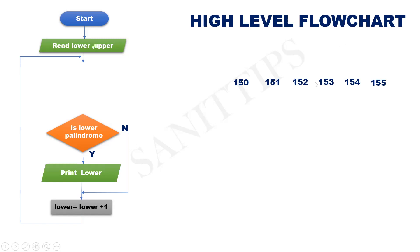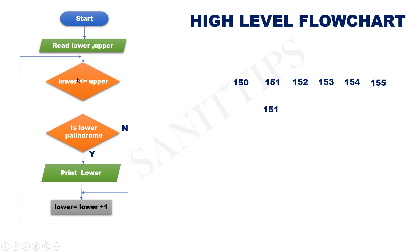Again it is 153. 153 is not palindrome, go to next number 154. 154 is not palindrome, go to the next number 155. 155 is also not palindrome, so we have reached the upper limit and we can stop this operation. The termination condition here is lower less than or equal to upper. If it is yes, check whether lower is palindrome. If it is palindrome, print lower and go to the next number. If it is not palindrome, just go to the next number. Once lower has reached upper, we have finished the operation and we can stop.